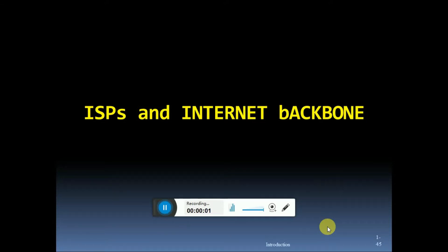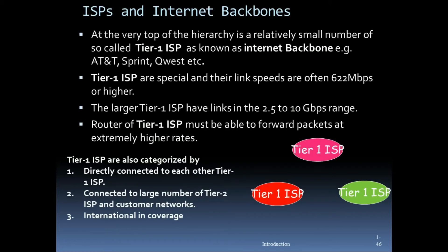The topic is ISPs, internet service providers, and internet backbone. At the very top of the hierarchy is a relatively small number of so-called tier one ISPs, known as the internet backbone. Examples include AT&T, Sprint, and Quest. These are the tier one ISPs.